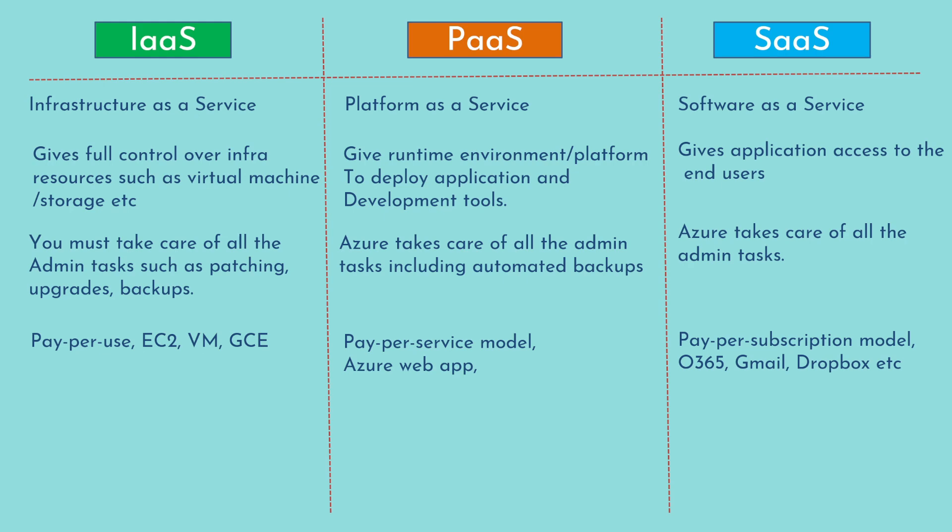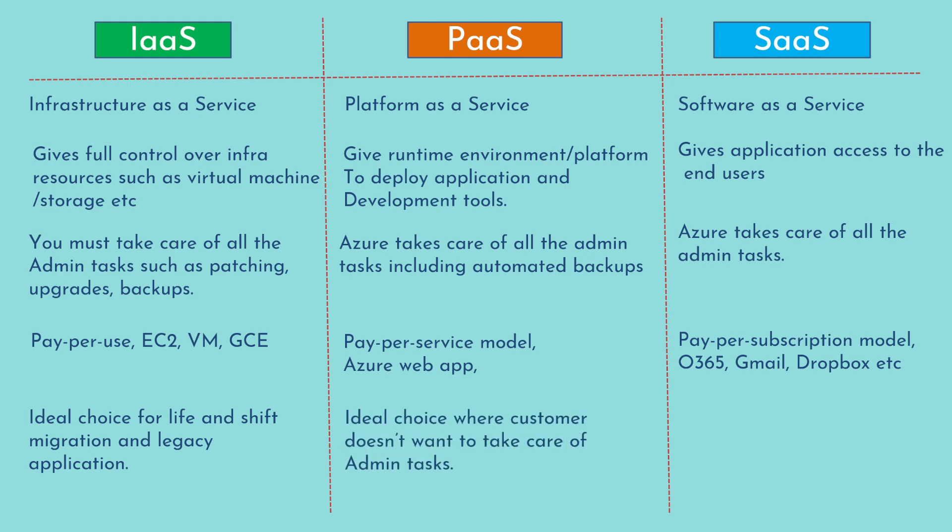In SaaS applications, you do not deploy anything — you just use the standard version of the application. Lift and shift migration is when you move your applications hosted on-premises to the cloud infrastructure so that you get all the benefits of cloud, but you do not want to make any changes to your application. IaaS would be the ideal choice for lift and shift because you get full control over your operating system. PaaS is the ideal choice when you do not need the underlying operating system access and just want to focus on your application deployment.